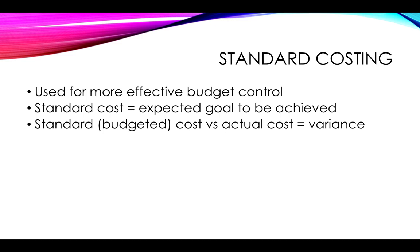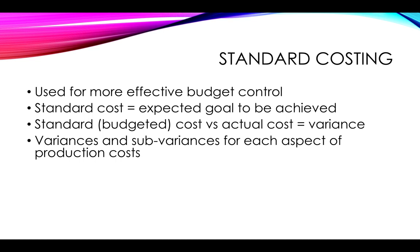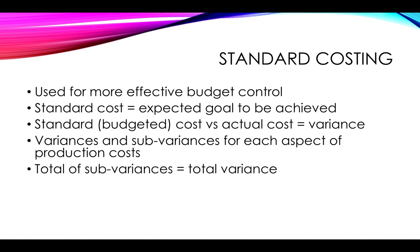The variance is how much the actual cost varied from what was budgeted. Variances and sub-variances for each aspect of the production costs can then be calculated. For each particular item, there are a number of reasons why it might not be the same as budgeted — these individual differences are known as sub-variances. Once you have all the sub-variances, you can add them together to get the total variance for that item or across all costs.